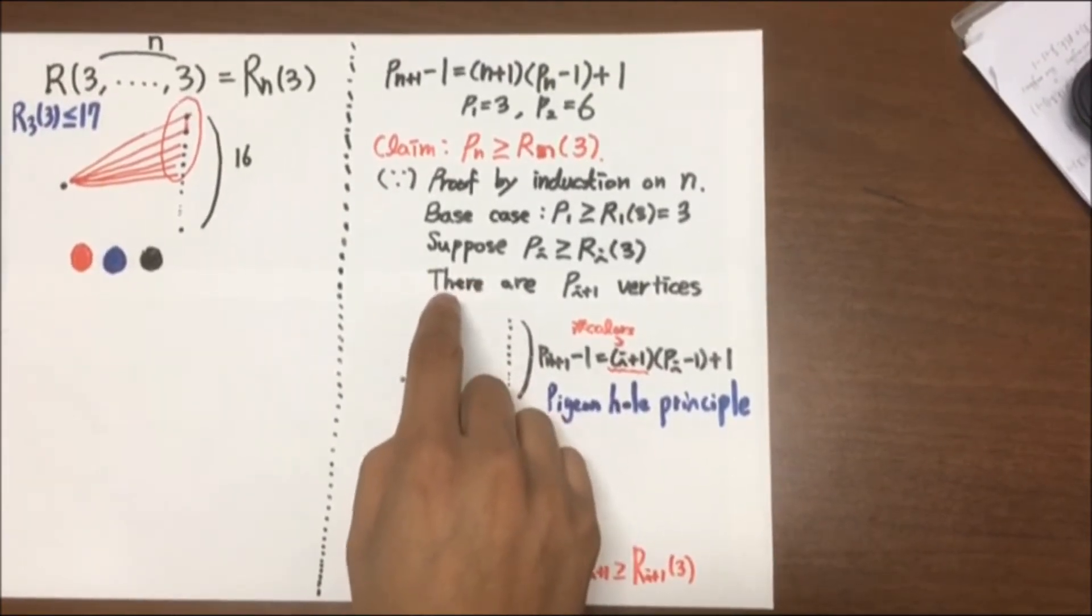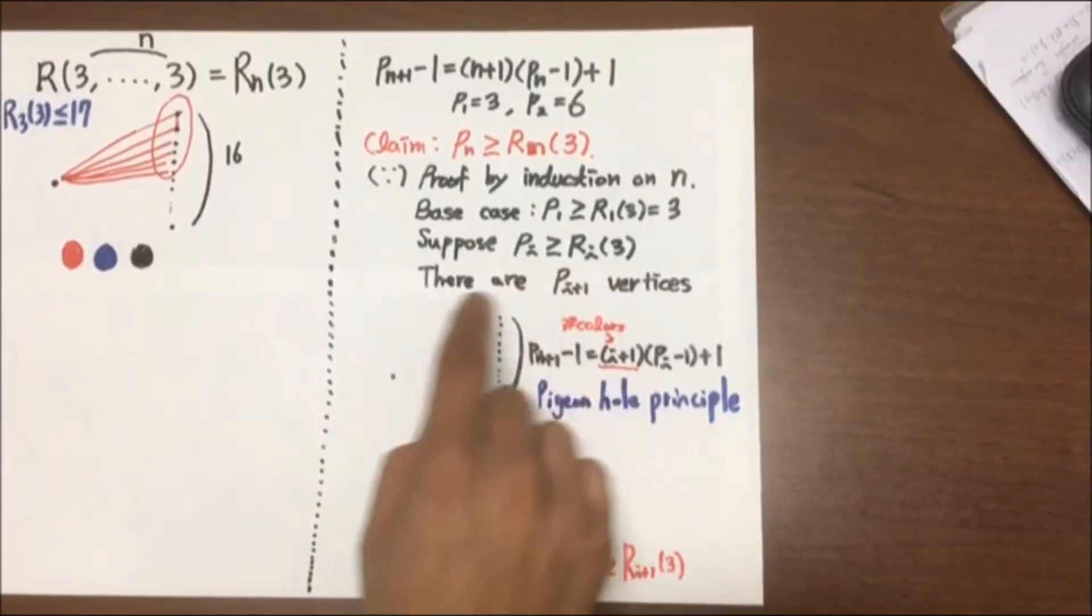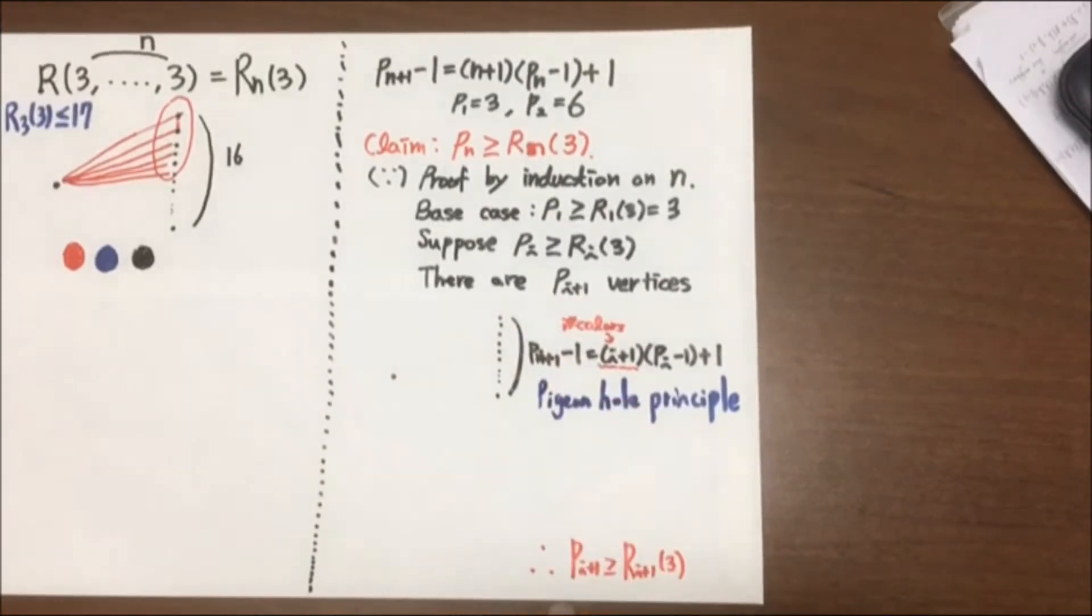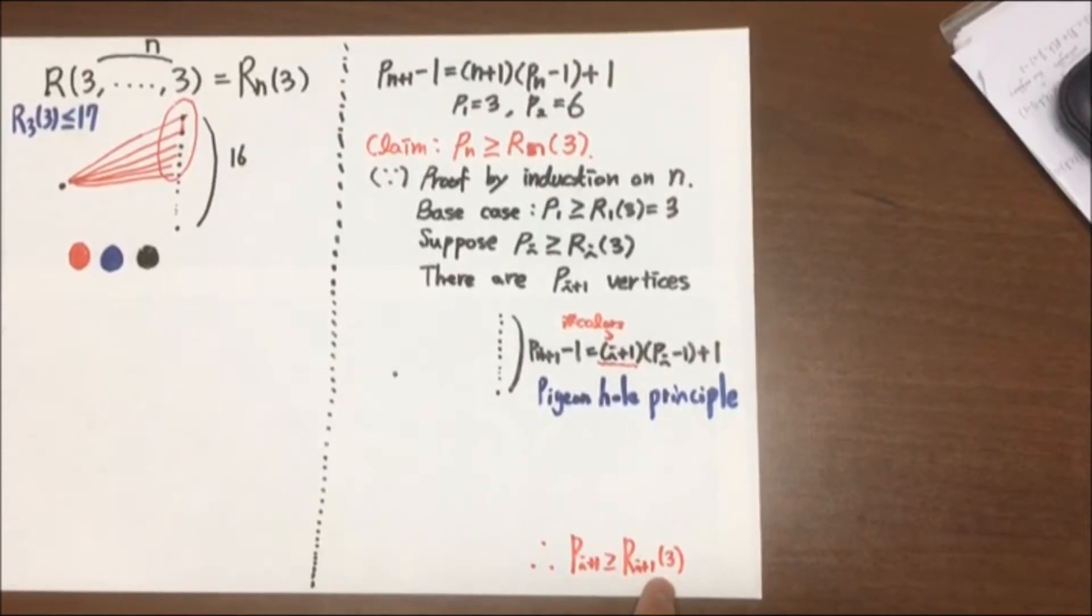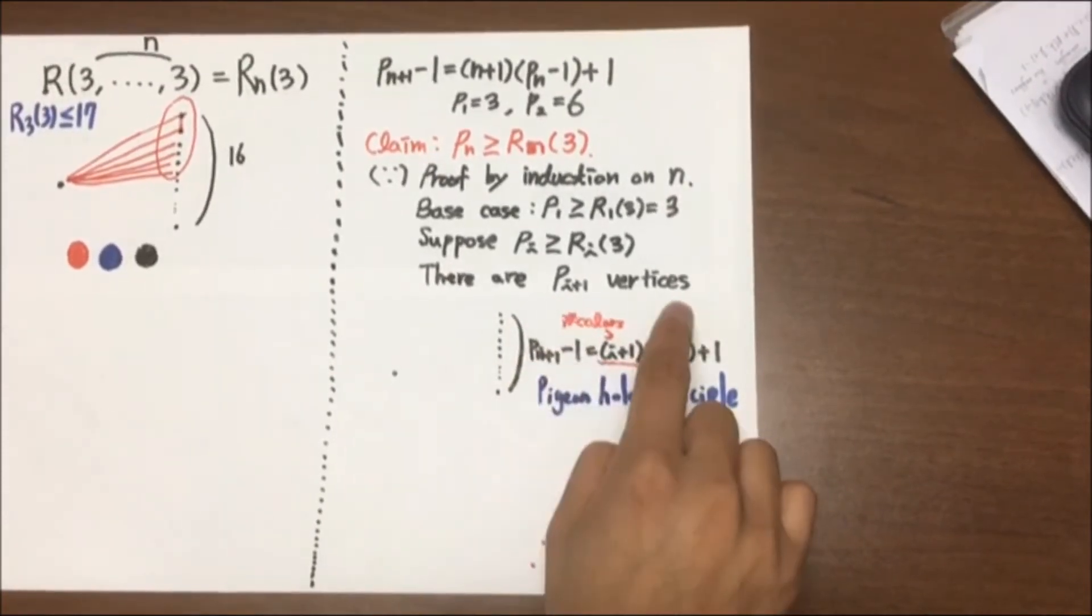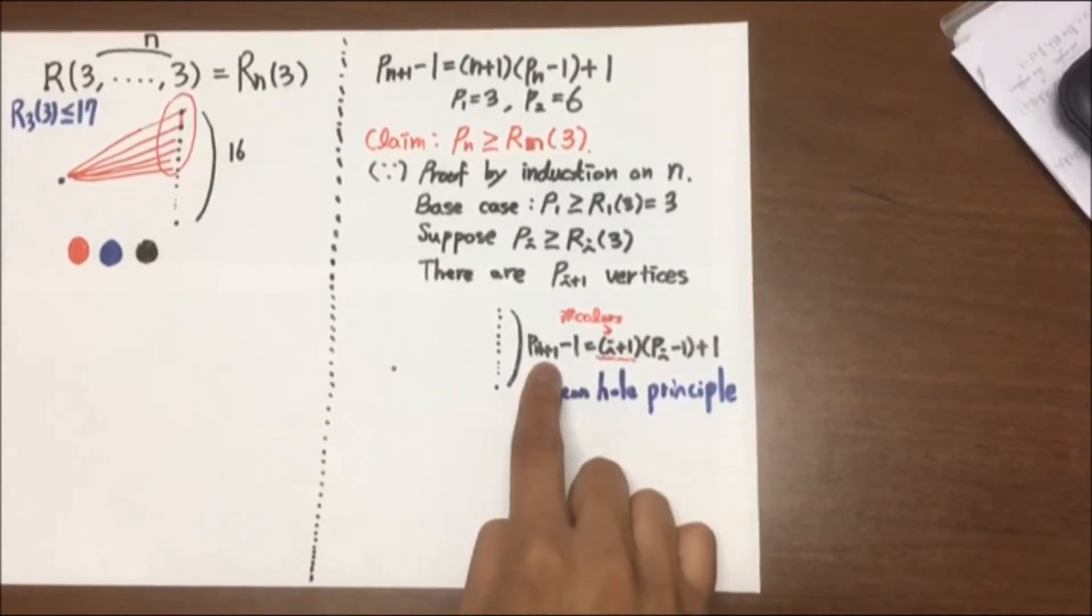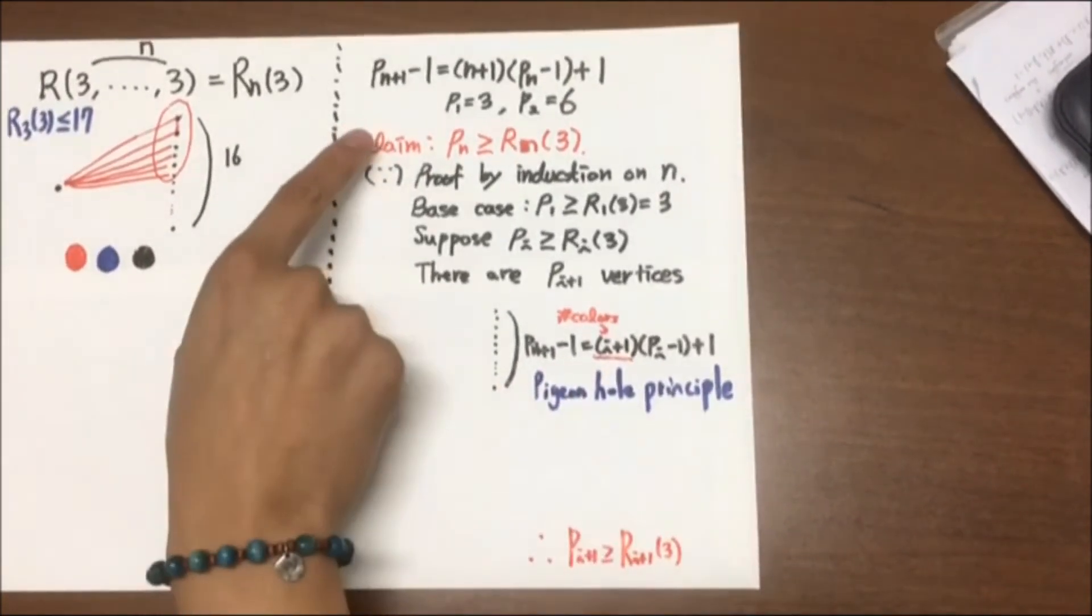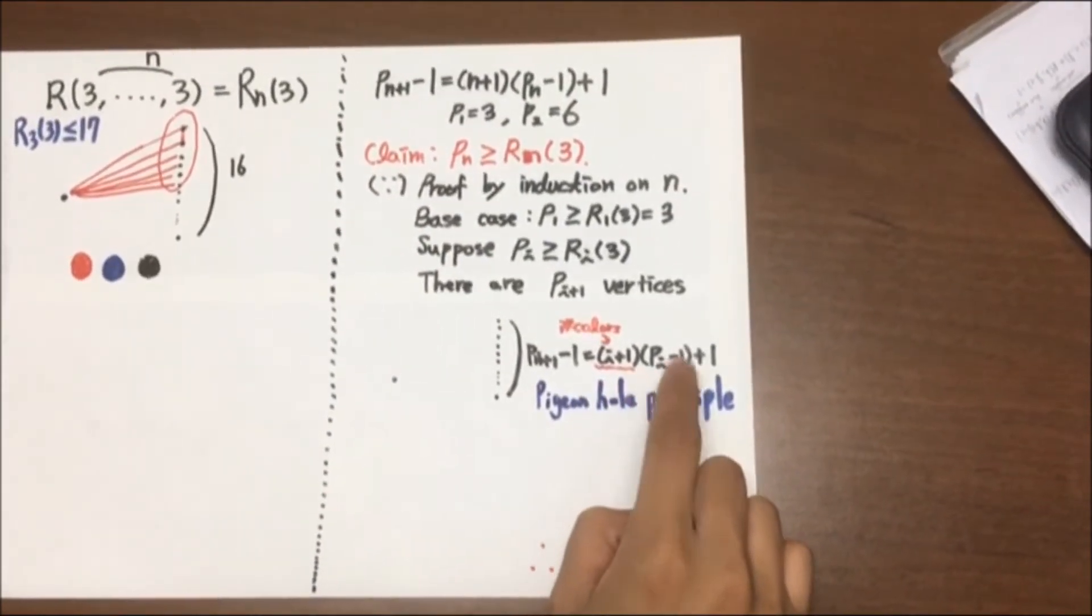Suppose the inductive hypothesis is true when N is equal to I. Then we move on to when N is equal to I plus 1 to show that P is greater than or equal to R_{I+1}(3). If there are P_I vertices, if we choose one vertex, there should be P_{I+1}, P minus 1 neighbors. And by the recurrence relation, it is equal to (I + 1) times P_{I-1} plus 1.